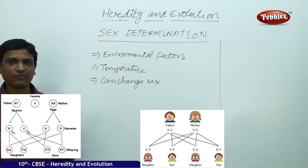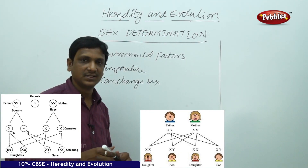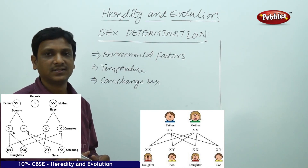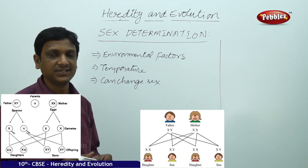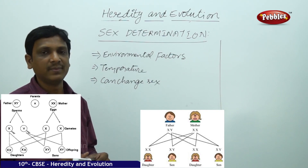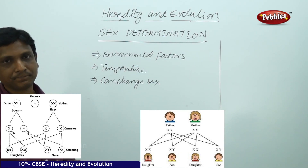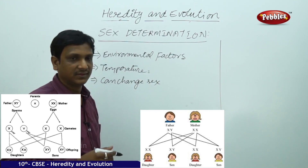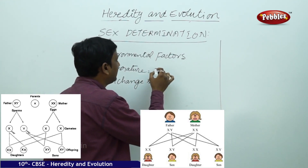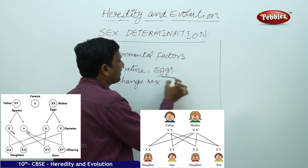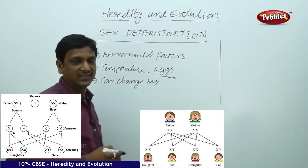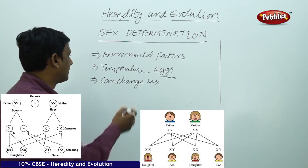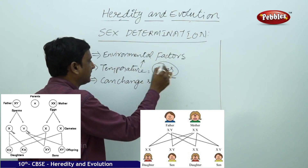In animals, in lower forms, in some organisms, the sex determination is based on environmental factors. Various environmental conditions decide whether the newborn baby will be a male or a female. In some cases, the temperature decides. Many animals lay eggs, and the temperature at which the eggs are hatched decides whether the born baby will be male or female. So temperature is also an environmental factor.